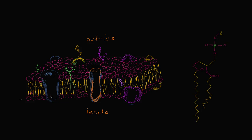What I want to start thinking about in this video is ways for molecules to go across a cellular membrane, either from the outside to the inside or from the inside to the outside. The first type of transport I'm going to talk about is transport that does not require energy — it's all about molecules moving down their concentration gradient. That type of transport we call passive transport. It does not require energy.